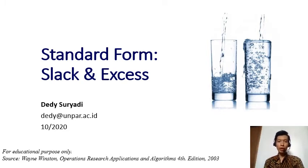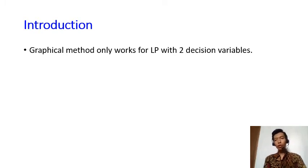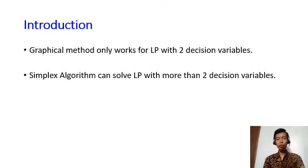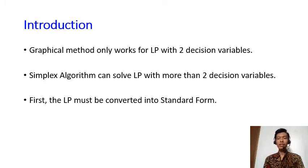Let's start today's topic with a form called standard form. We have learned about graphical methods, but that only works for two decision variables — even three decision variables is already difficult to solve graphically. So now I'm going to introduce the simplex algorithm, which can solve problems with more than two decision variables. In the real world you usually have many decision variables, surely more than two or three. When you want to use the simplex algorithm, you must first convert your linear programming model into what is called standard form.